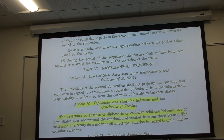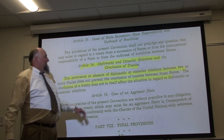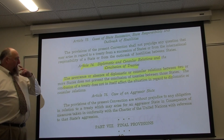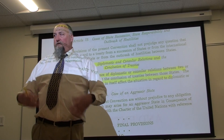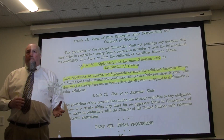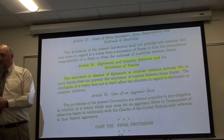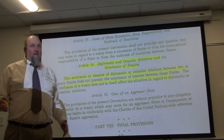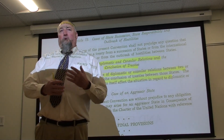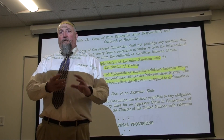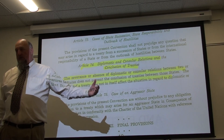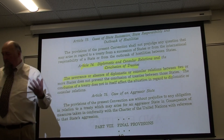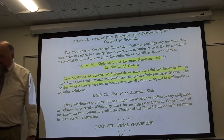Article 74 addresses diplomatic and consular relations and the conclusion of treaties. The severance or absence of diplomatic relations — for example, withdrawing an embassy as we are seeing in Ukraine — does not prohibit states from entering into treaties or agreements. The Vienna Convention does not prohibit continued negotiations toward a treaty even while diplomatic relations are being withdrawn.